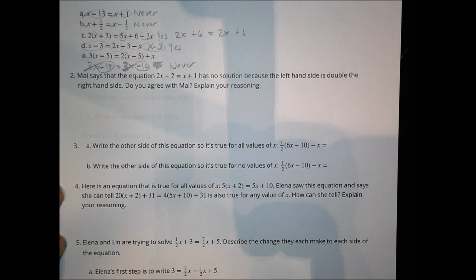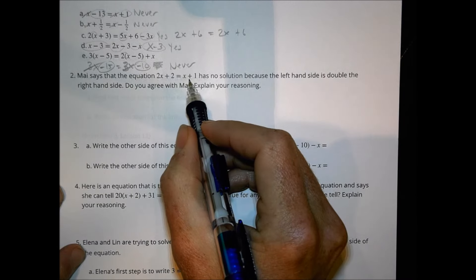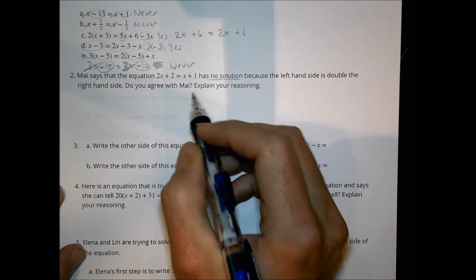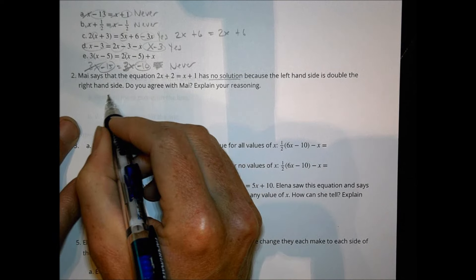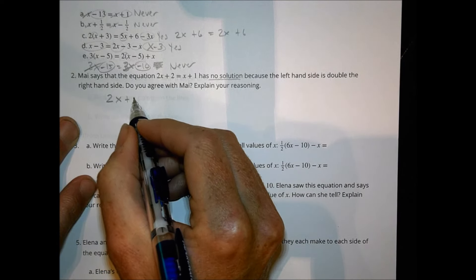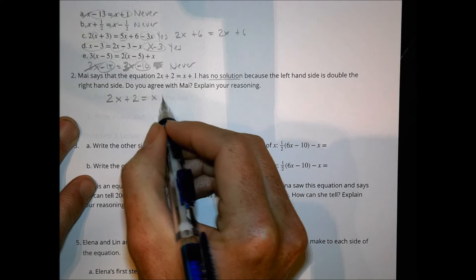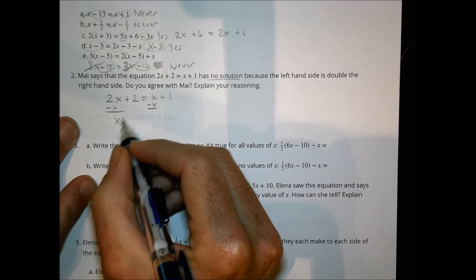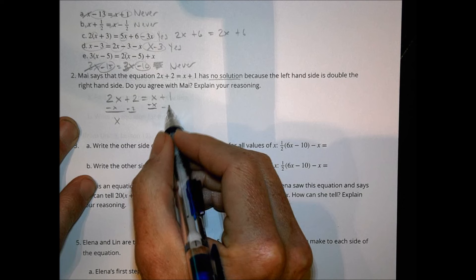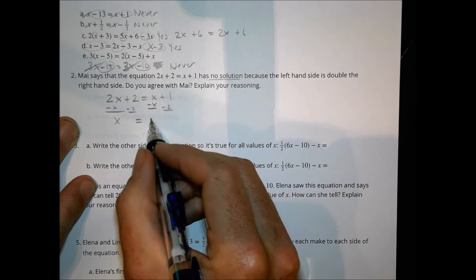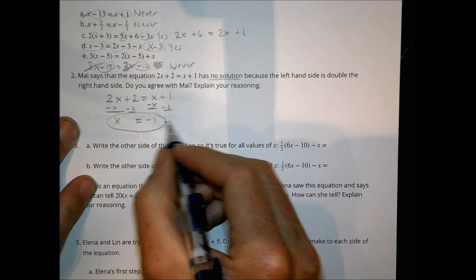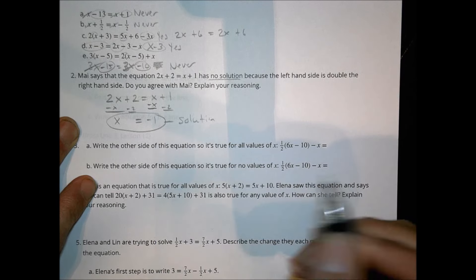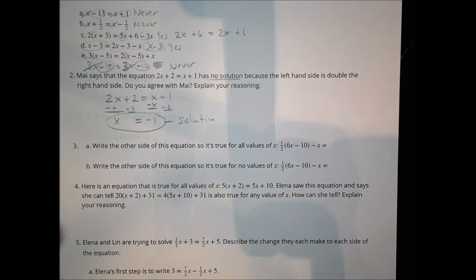Number 2: May says the equation 2x plus 2 equals x plus 1 has no solution because the left-hand side is double the right-hand side. Do you agree or disagree? Let's take a look. If I try to solve this and subtract x from both sides, I have x plus 2 equals 1. Subtract 2 from both sides, and x equals negative 1. That is an actual solution to this problem, which means it doesn't have no solution — there is exactly one solution. So we would disagree with May.